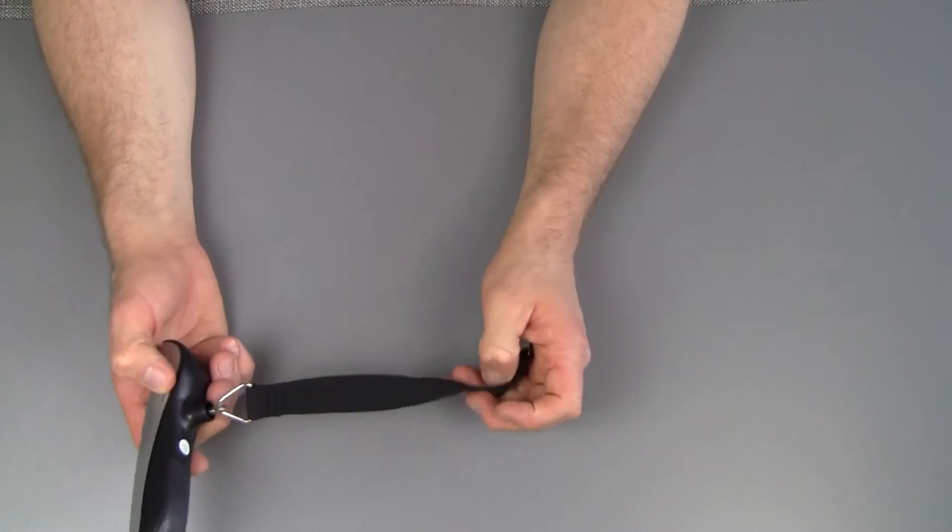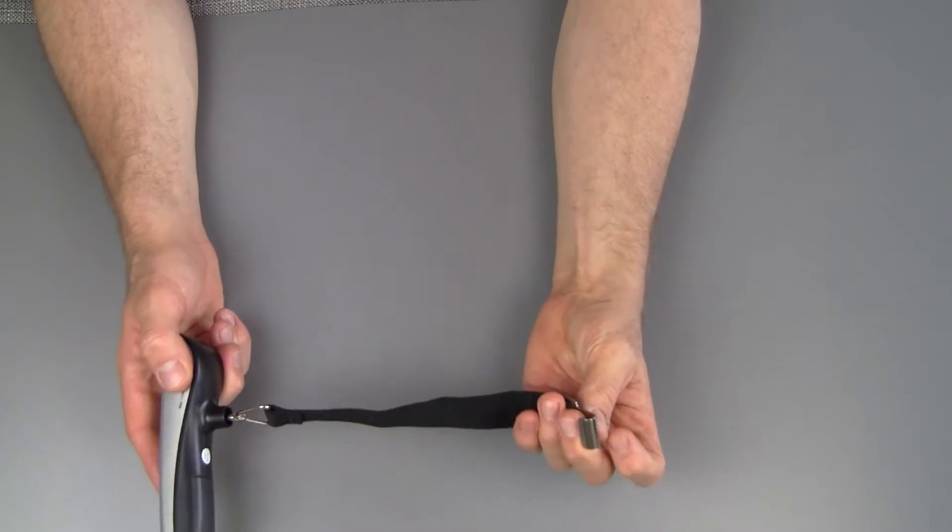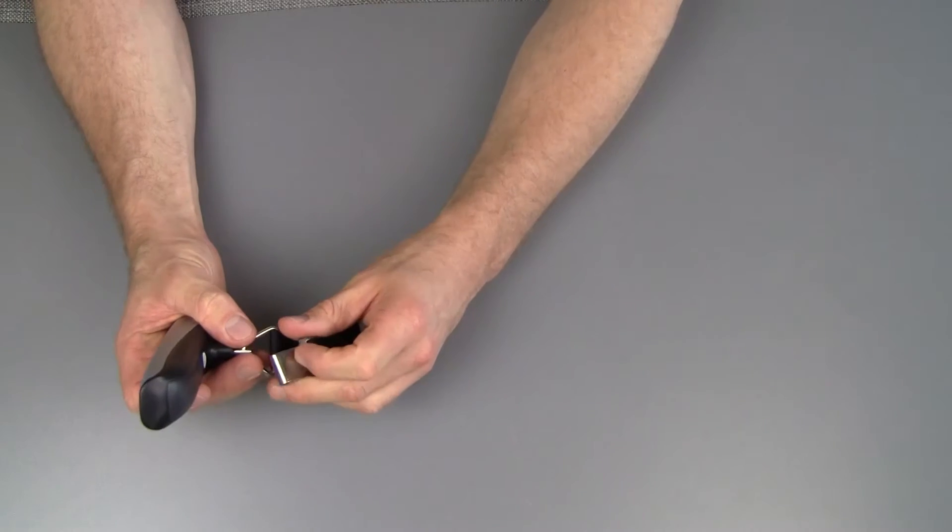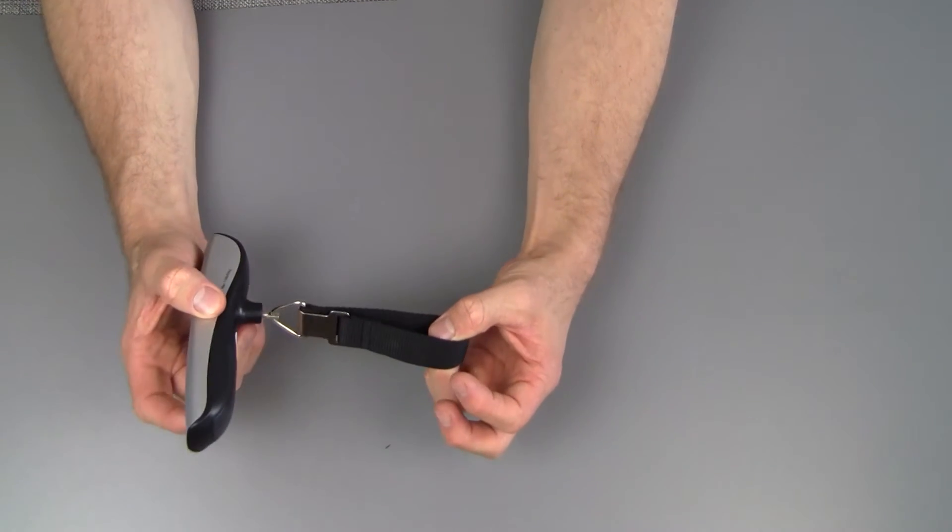On the bottom we have the actual mechanism where the weight is measured with a strap and a hook. So you can either hook this onto something or you hook it around and you click it back in here and then you can lift your suitcase by the handle.